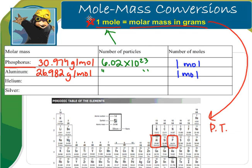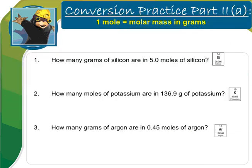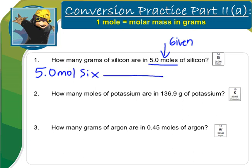Now knowing that 1 mole is equal to the molar mass in grams for a substance, we can use it in our problems as a new conversion factor. Here's an example: how many grams of silicon are in 5 moles of silicon? We're going to use dimensional analysis to solve this. The 5 moles of silicon is my given, so I start my problem there. Because I've started with moles, moles have to go on the bottom of my dimensional analysis. Since I'm solving for grams, grams go on top.